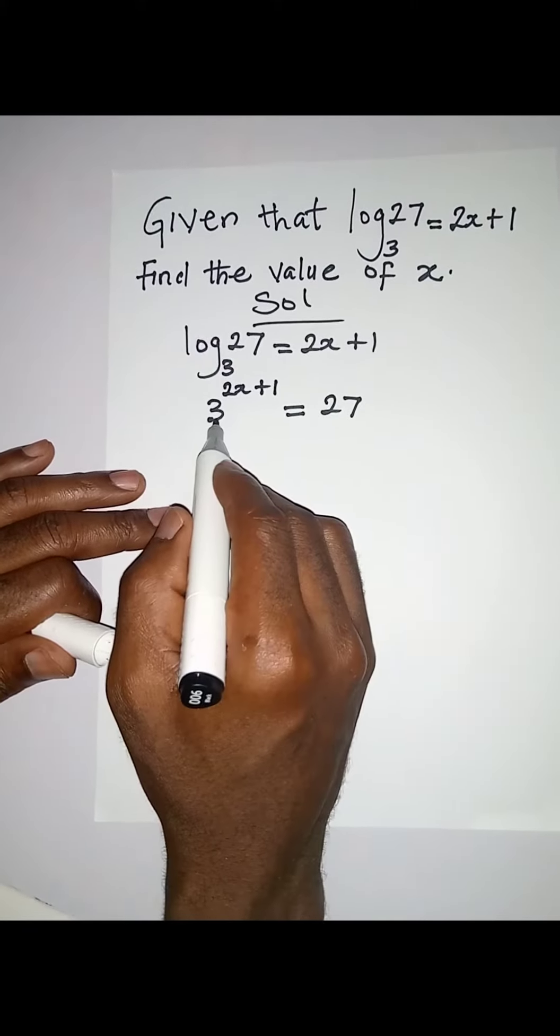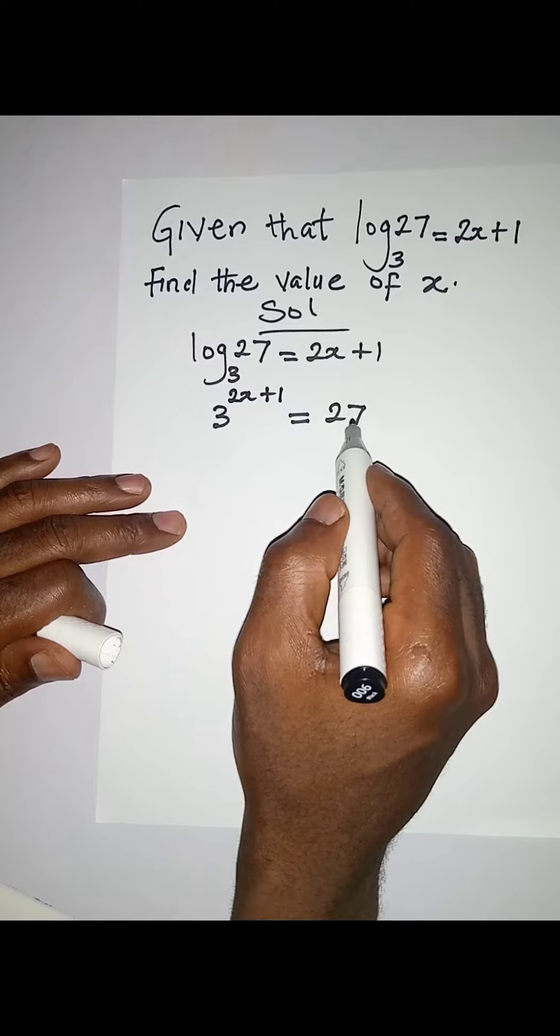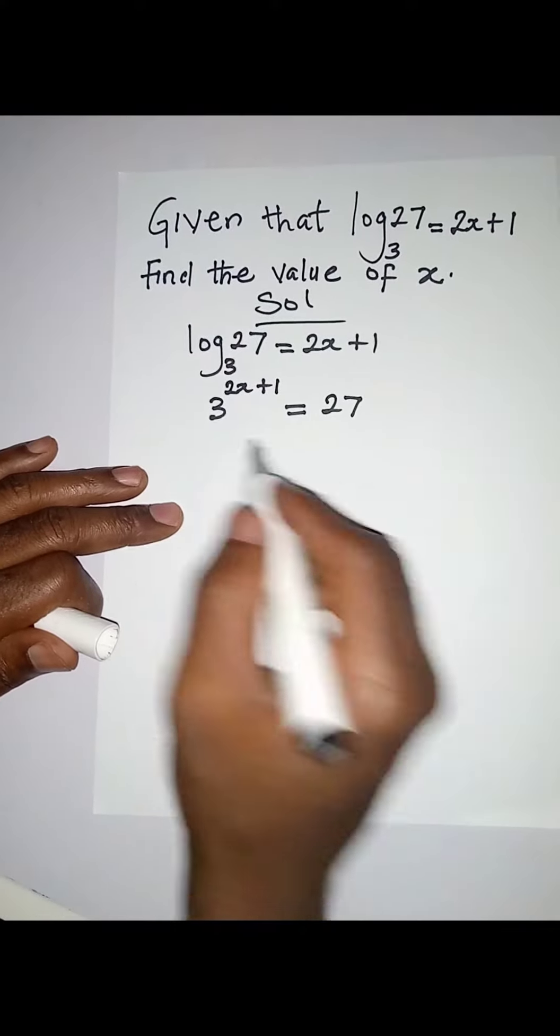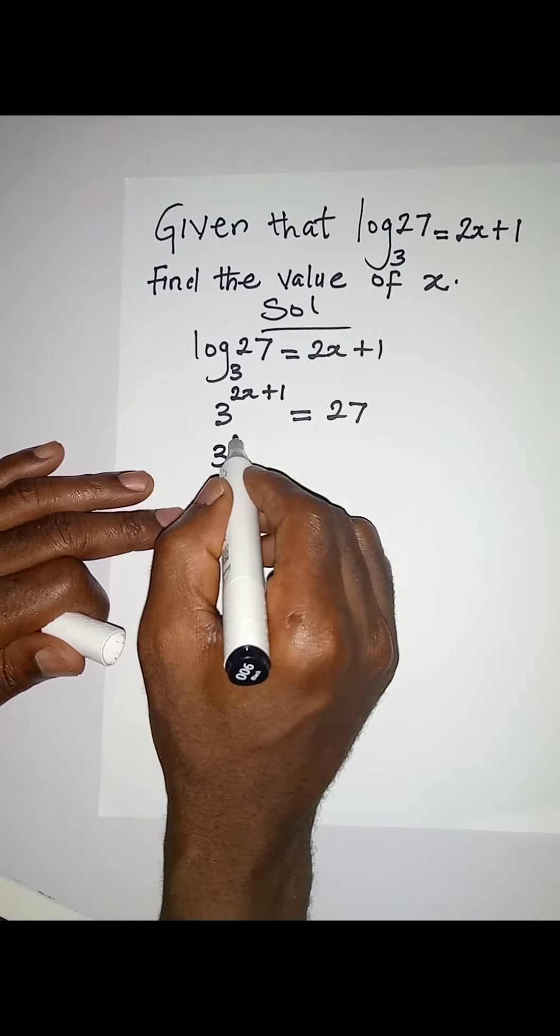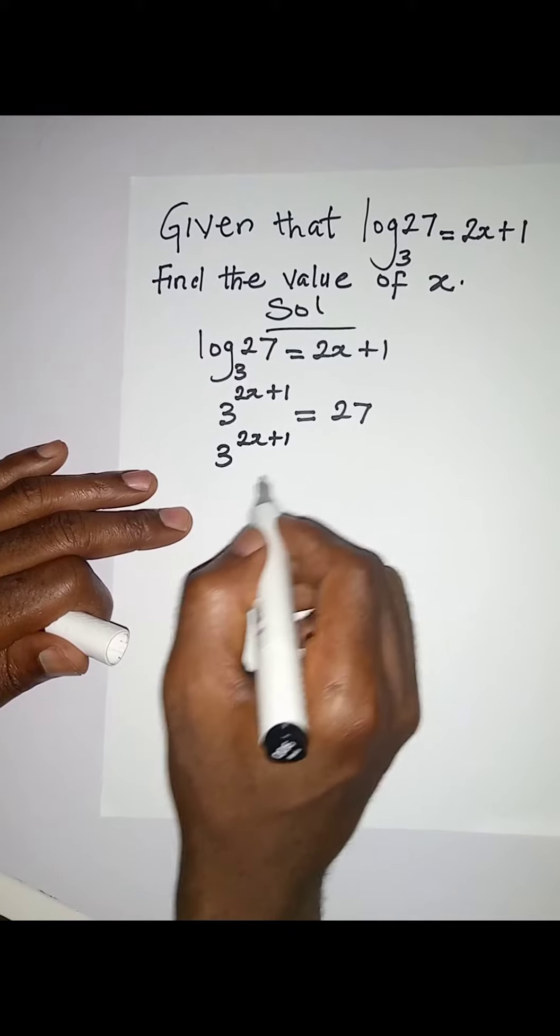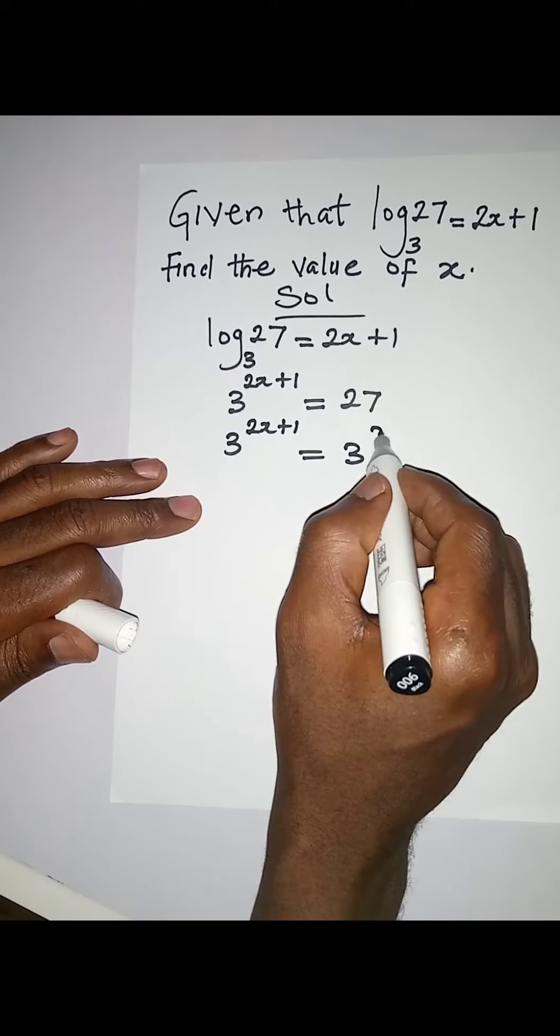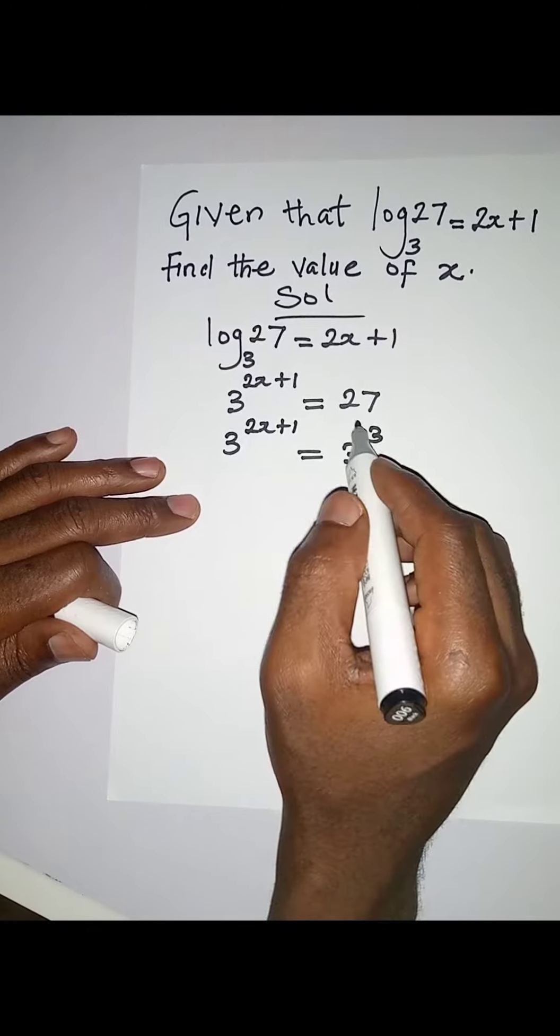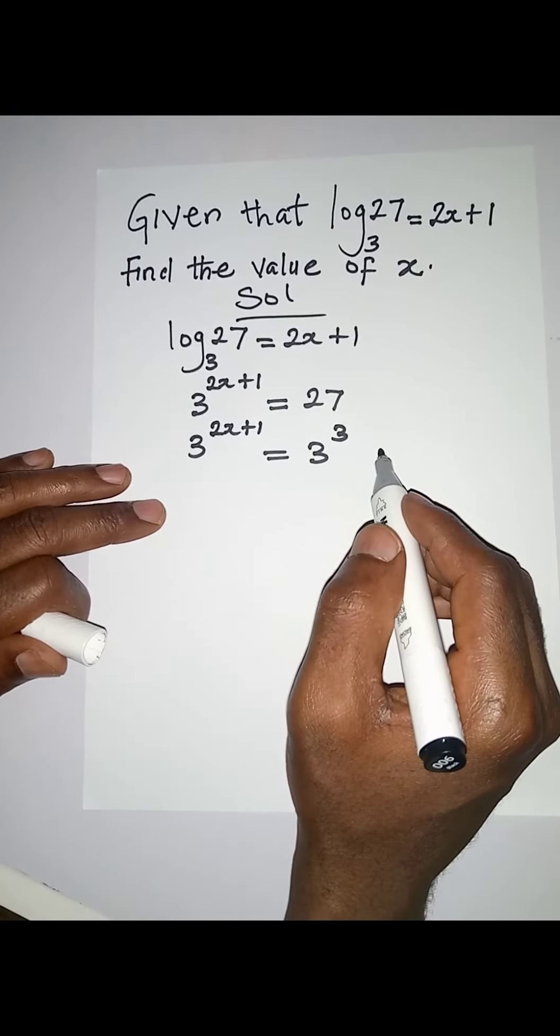So I'm going to have 3^(2x+1) = 3³, because 27 is 3 times 3 times 3. Now the bases are the same, we will work with the powers.